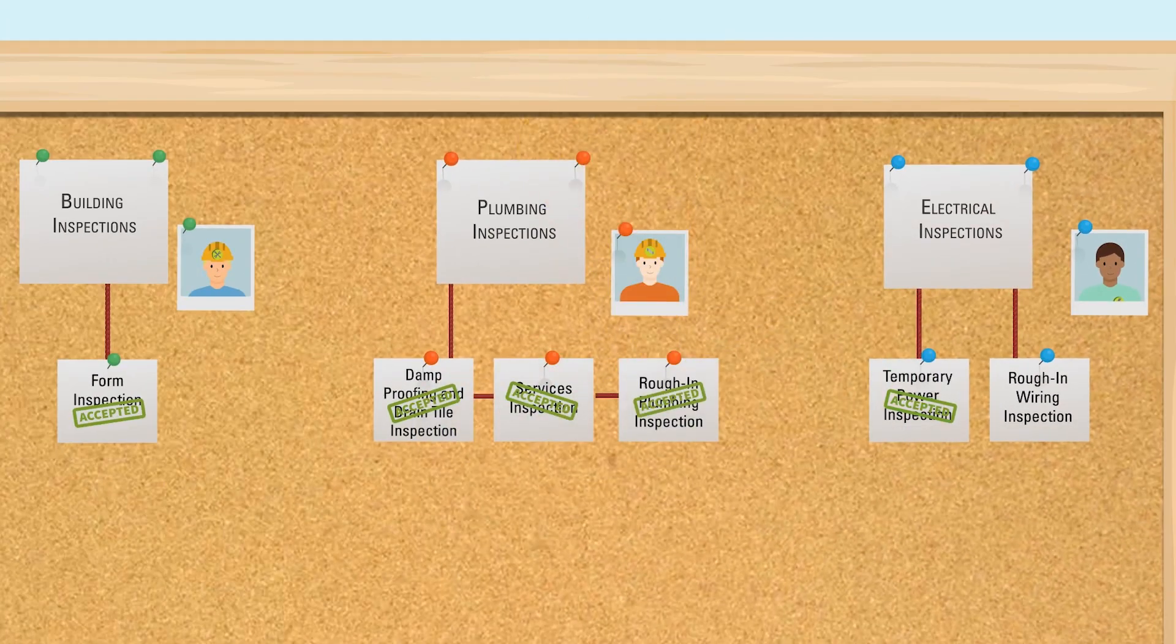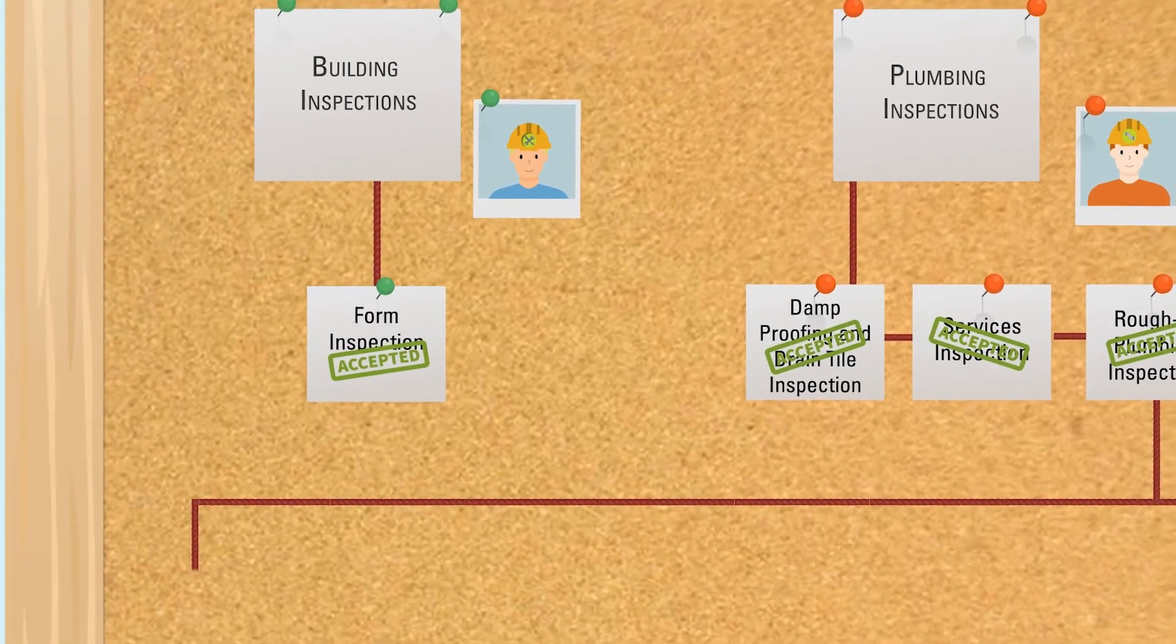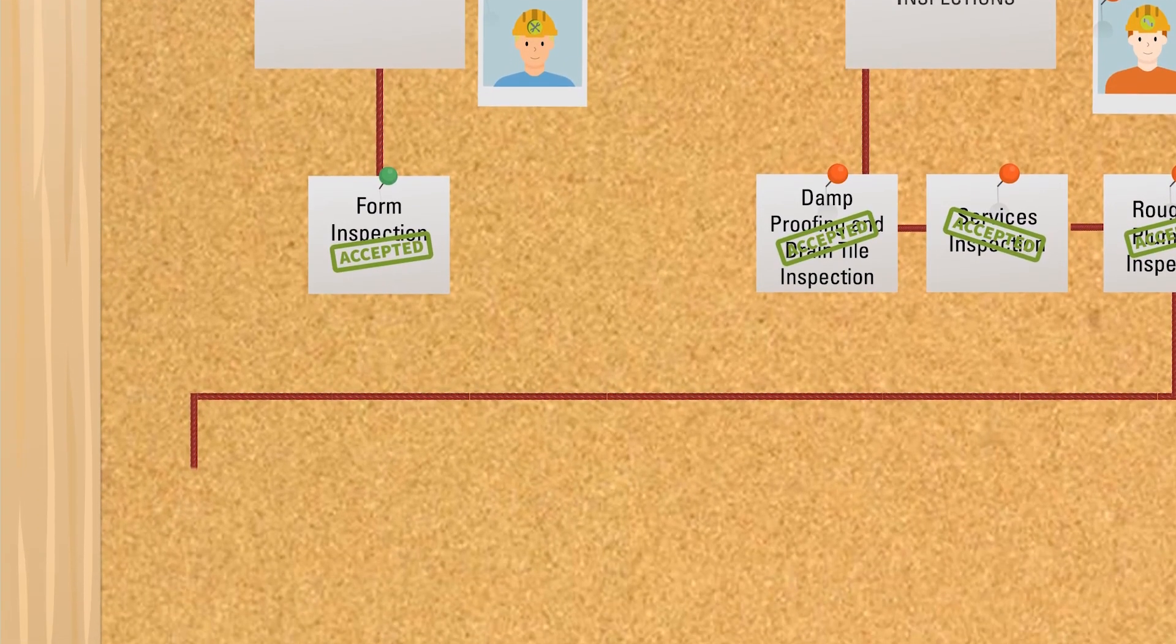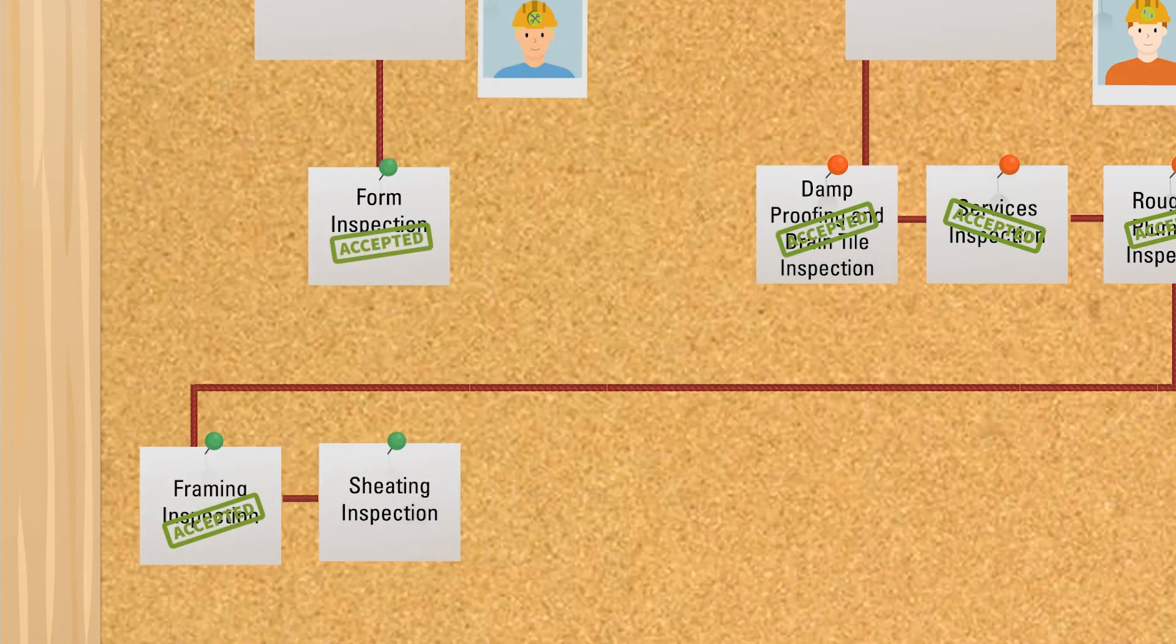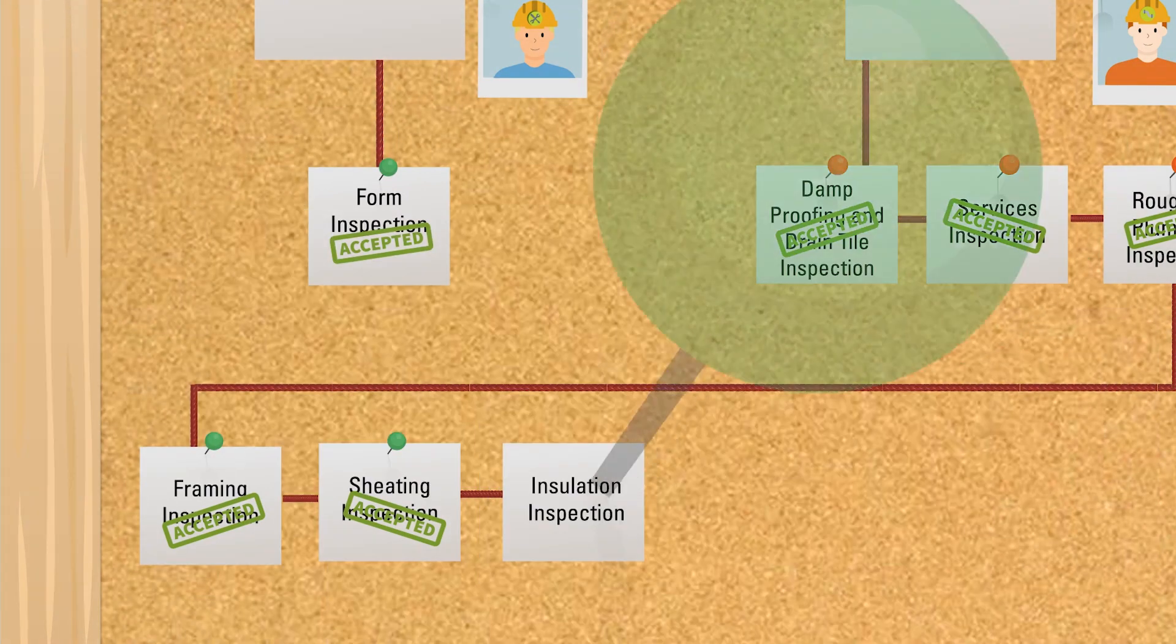Once your rough-in plumbing and rough-in wiring inspections have been accepted, you can move on to the next stage in building inspections. Here, you will need a framing inspection. You may need a sheathing inspection if sheathing is a part of your design, and you will need an insulation inspection.